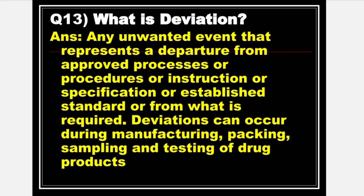Next is: What is Deviation? Answer: Deviation is any unwanted event that represents a departure from a defined process, procedure, instruction, specification, or established standard, or from what is required. Deviation can occur during manufacturing, packing, sampling, and testing of drug products.